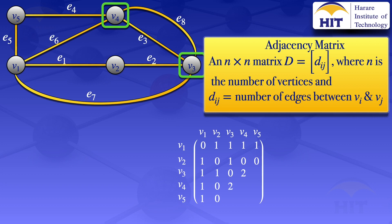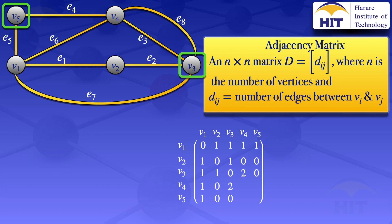Between v3 and v5, there are no edges, so we put zero at v3,v5 and also at v5,v3.